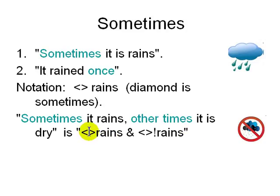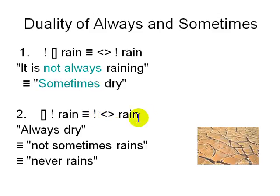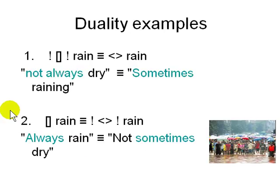If diamond(rains) and diamond(not rains), it means at different times — sometime in the future it rains, sometime in the future it doesn't rain. Looking at duality: 'it is not always raining' is the same as 'sometimes it is not raining.' 'Always not rain' means it's not the case that it ever rains, which is the same as 'always dry' and 'never rains.' The double negation: 'not always dry' is the same as 'sometimes raining,' and 'always raining' is the same as 'it's not the case that it's always dry.'